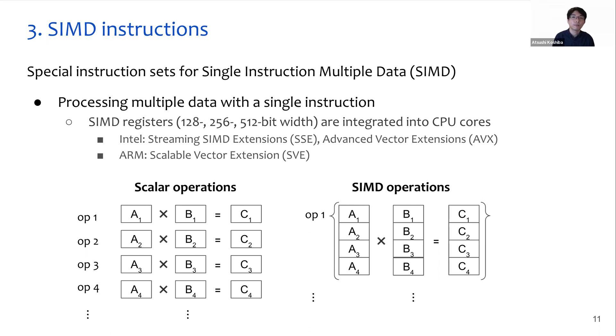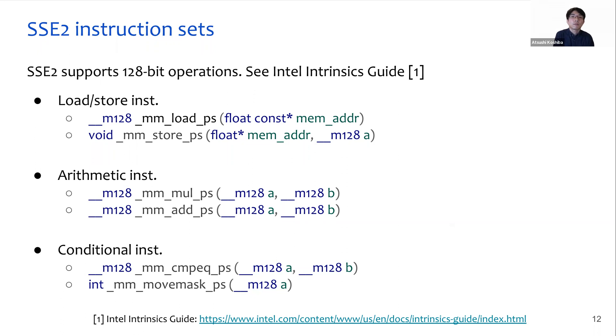This slide shows an example of the SSE2 instructions, which is a type of SIMD extension provided by Intel x86 CPUs. SSE2 supports 128-bit operations. These instructions allow us to process four single precision floating point elements with a single instruction. You can check more details by visiting the Intel intrinsics guide. I think this is very important because it's related to the assignment of this lecture.